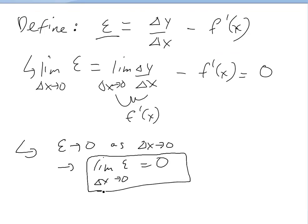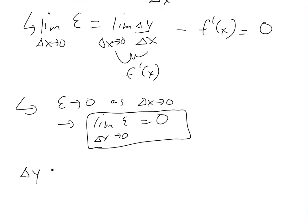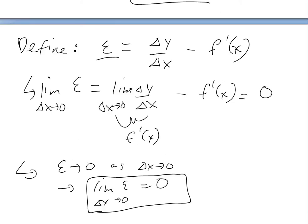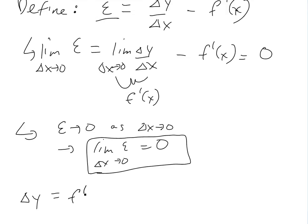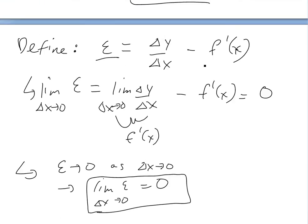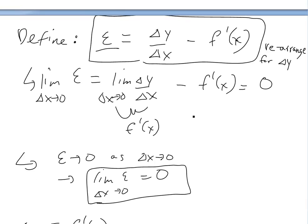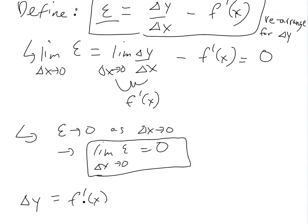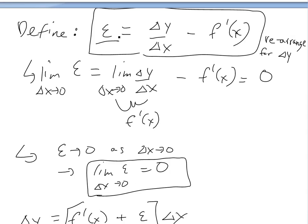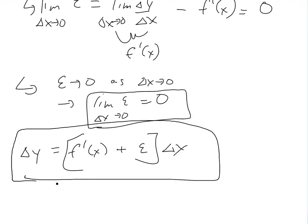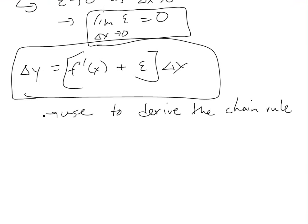We're going to write delta y in terms of epsilon. If we rearrange the epsilon definition, delta y is equal to (f prime of x + epsilon) times delta x. We'll use this way of writing delta y to prove and derive the chain rule.